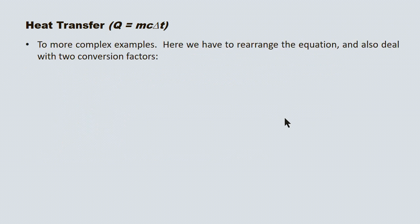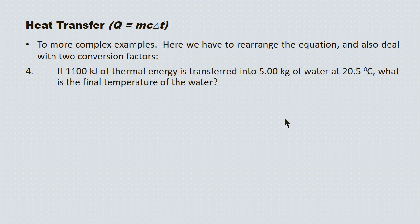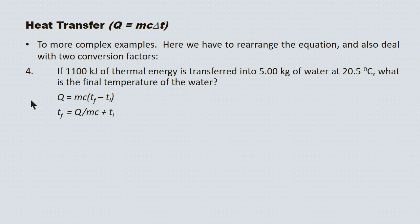Here's a more complex example where we have to rearrange the equation and apply a couple of conversion factors. If 1,100 kilojoules of thermal energy is transferred into 5.00 kilograms of water at 20.5 degrees Celsius, what's the final temperature? The energy is in kilojoules and the mass is in kilograms — both require conversion to joules and grams respectively. We start with our equation, then rearrange to isolate Tf: Tf = Q/(mc) + Ti.